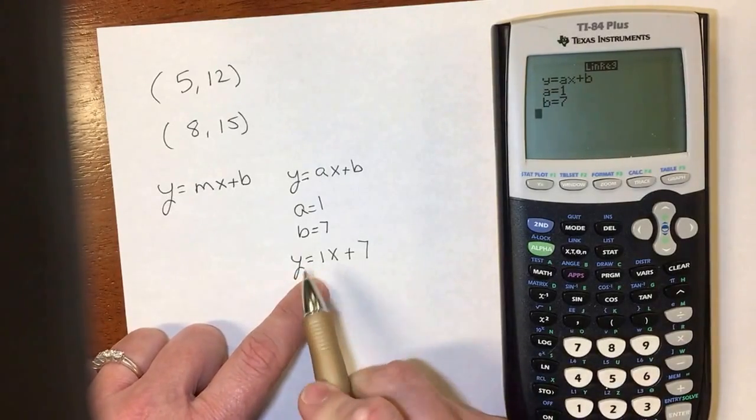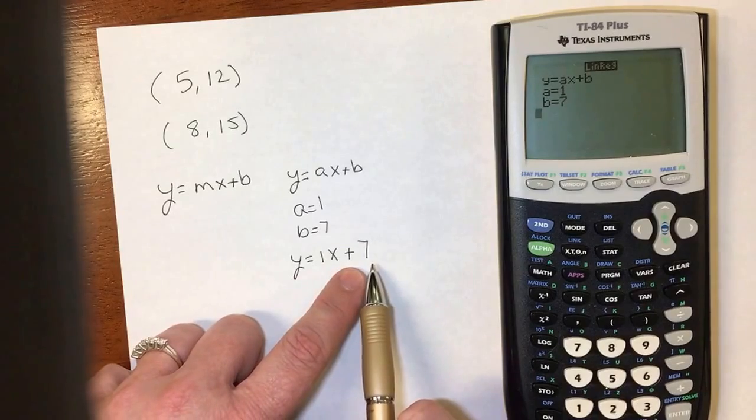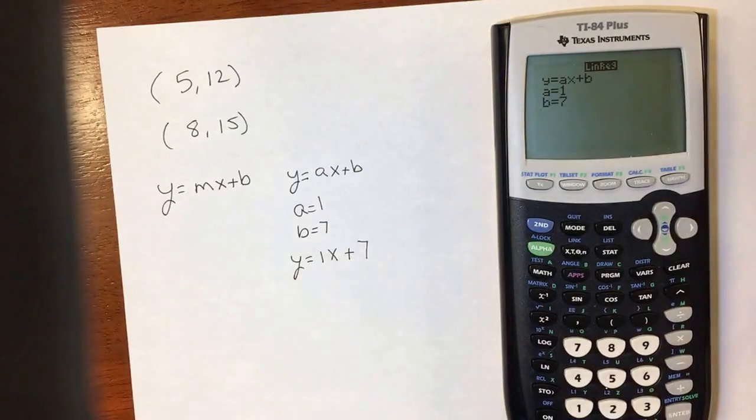So the number in front of the x, or the a in this case, is my slope. And the number after the x, or the b, is my y-intercept. So if you use this, you have to be careful and know what the a and the b are representing.